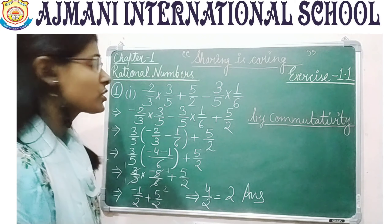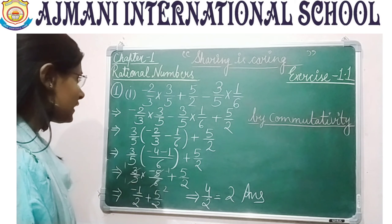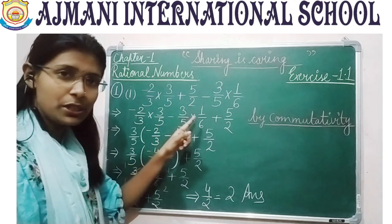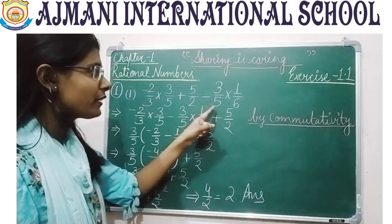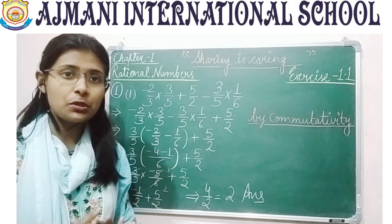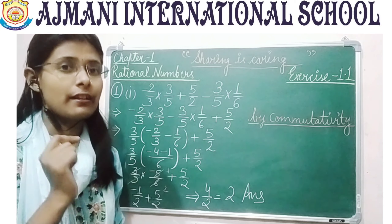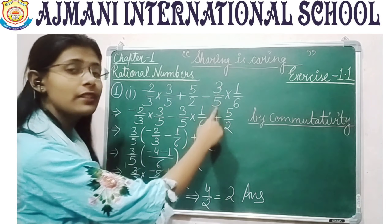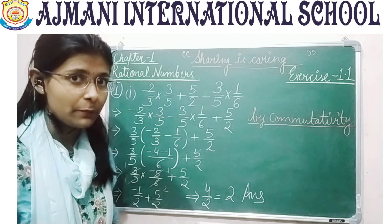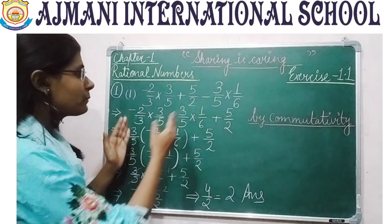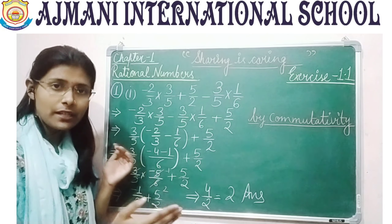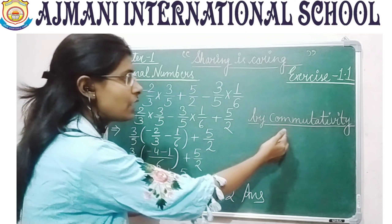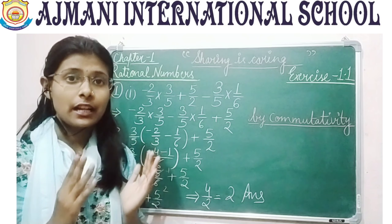The first part of the question is minus 2 by 3 multiplied by 3 by 5, plus 5 by 2, minus 3 by 5 multiplied by 1 by 6. What you need to do is spot the similar rational number — 3 by 5 appears in both the first and second terms. So just keep them together by using the commutative property.